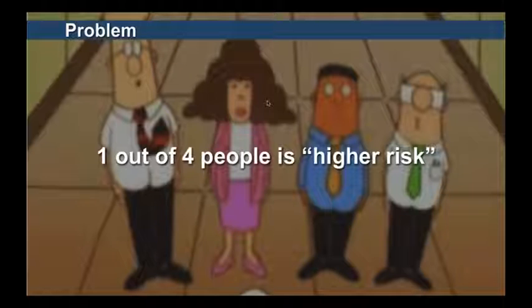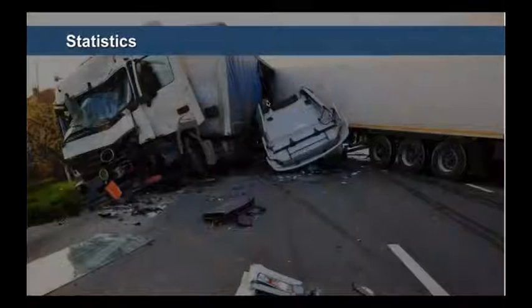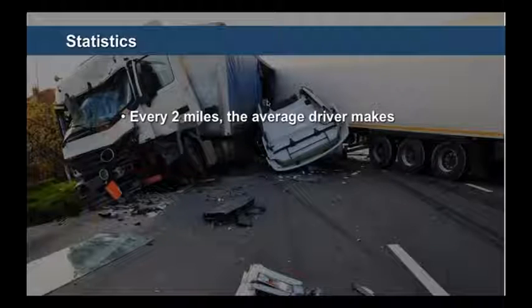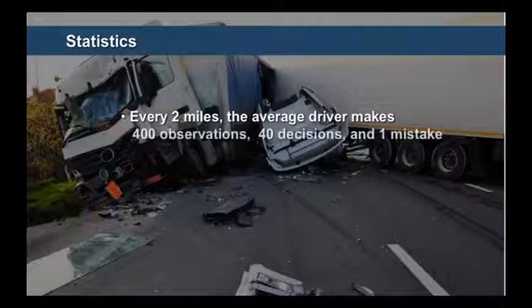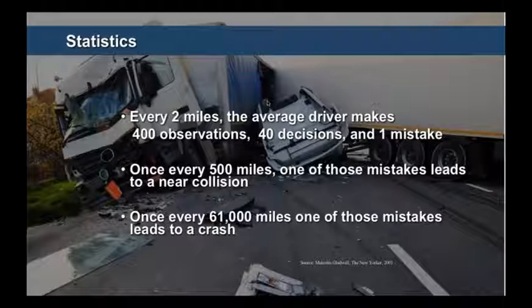We have clients in non-industrial sectors where higher risk might mean someone who's a poor producer, has a bad attitude, a higher risk of voluntary or involuntary termination, or more serious issues like theft, fraud, violence, or harassment. Back to transportation: every two miles, the average driver makes 400 observations, 40 decisions, and one mistake. Once every 500 miles, one of those errors leads to a near collision. Once every 61,000 miles, one of those mistakes leads to a crash.